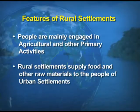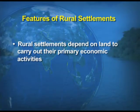Features of rural settlements: number one, people are mainly engaged in agricultural and other primary activities. Number two, rural settlements supply food and other raw materials to the people of urban settlements, as they have enough space to grow these items. Number three, rural settlements depend upon the land to carry out their primary economic activity.